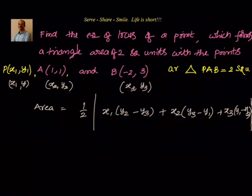Now let's substitute these values. Basically what are we doing here? We know the geometric condition. The geometric condition is area of triangle should equal 2 square units. So try to express that in algebraic form. We will be getting our equation of locus of a point which forms a triangle area of 2 square units with the given points A and B.